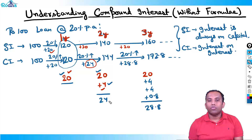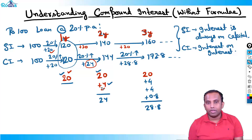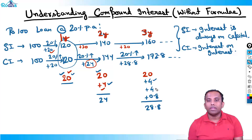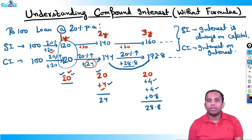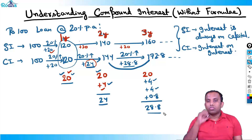So SI and CI for the first year are both 20. SI for the second year is 20; CI for the second year is 24; CI for the third year is 28.8. You can see: 28.8 here and 24 here. This is the concept I wanted to discuss. Now to avoid decimals — because 0.8 might become 0.6 or some recurring decimal — I want to avoid solving in decimals.